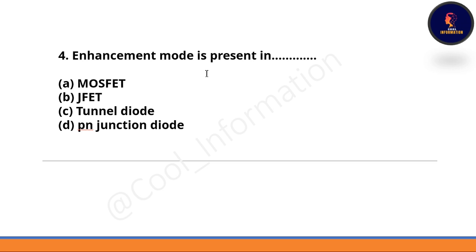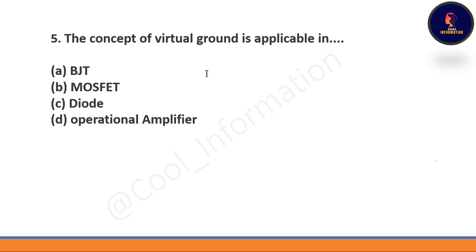Next question: Enhancement mode is present in — option A: MOSFET, option B: JFET, option C: tunnel diode, option D: PN junction diode. The correct option is option A — MOSFET. Enhancement mode is actually present in MOSFET. Next question: The concept of virtual ground is applicable in — option A: BJT, option B: MOSFET, option C: diode, option D: operational amplifier. The correct option is option D — operational amplifier.